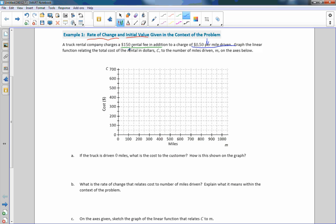Graph the linear function relating the total cost of the rental in dollars C to the number of miles driven m on the axis below. Let's not call m our slope in this situation because it would get confusing. m is miles, c is cost in dollars. This is our m-axis, and this is our c-axis. There's a $150 fee, so that is my initial cost, $150.